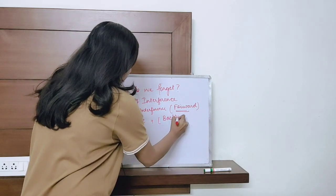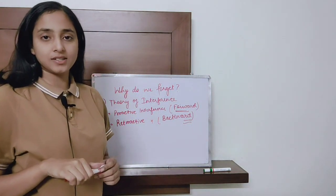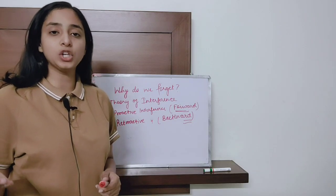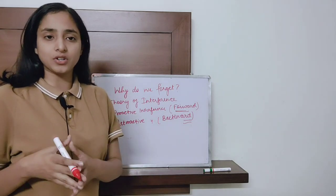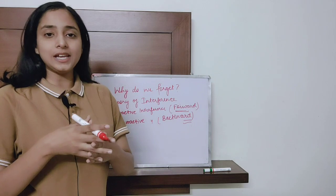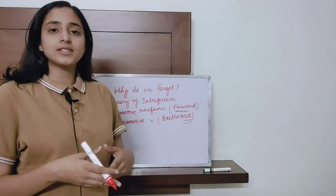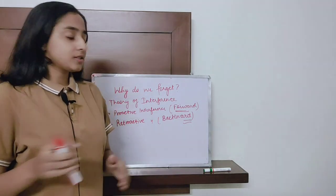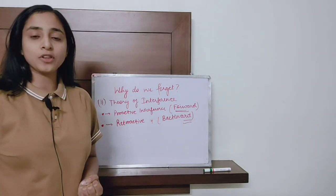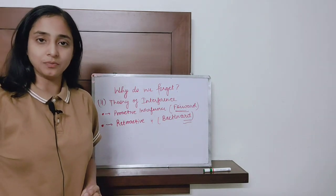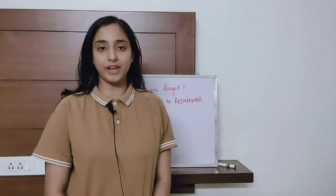The second type is retroactive interference, also known as backward interference. This takes place when, due to our subsequent learning of a new concept, we forget what we learned in the past. For example, if I shift to a country where French is mostly spoken and I start speaking French daily, chances are that after some years I'll start forgetting English — because acquiring the new language causes me to forget the past skill.